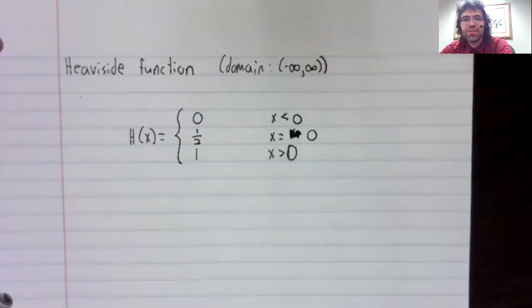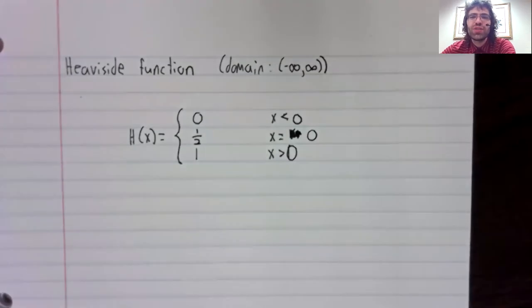And then the second piece consists of a single point. It consists of the point x equals zero.